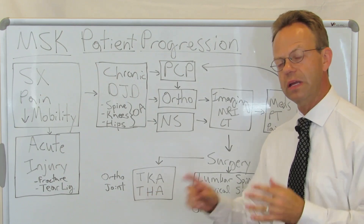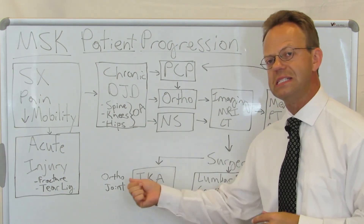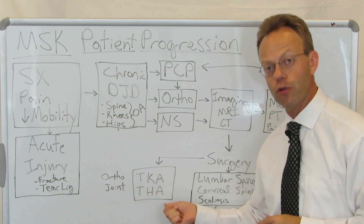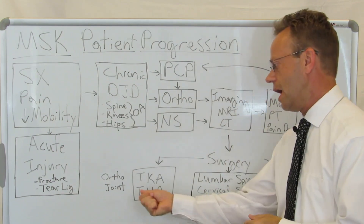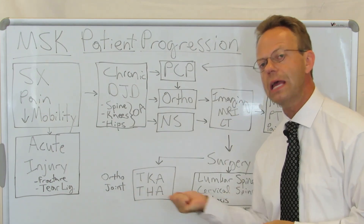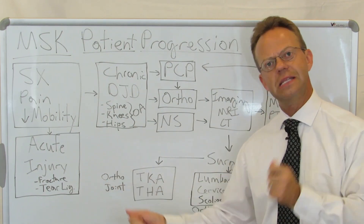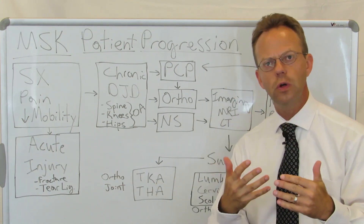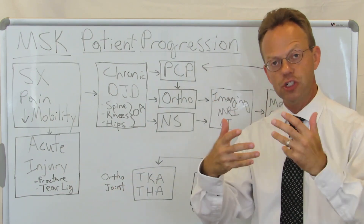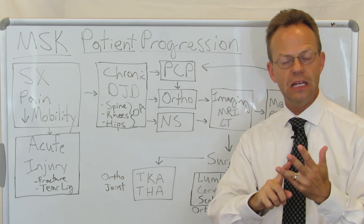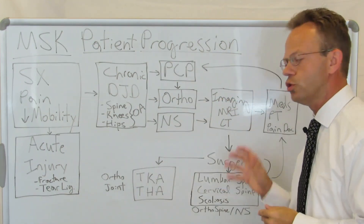For the other weight-bearing joints — the knees and hips — you can get a joint replacement. A knee replacement is a TKA, or total knee arthroplasty. Arthroplasty means to change the joint by putting in an artificial one. A hip replacement is a THA, or total hip arthroplasty. You can go to a general orthopedist for this, as they often do joint replacements. However, there are orthopedists who have done a fellowship specifically in hip and knee arthroplasty.